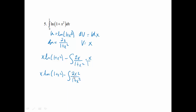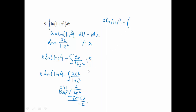Evaluating this integral — since the degree of the numerator is greater than or equal to the degree of the denominator, I'm going to use long division. Dividing x² + 1 into 2x²: multiply x² by 2 to get 2x² + 2, then subtract to get a remainder of −2. So we have x·ln(1 + x²) minus the integral of 2 minus 2/(x² + 1), and we're still taking the integral of both of those.